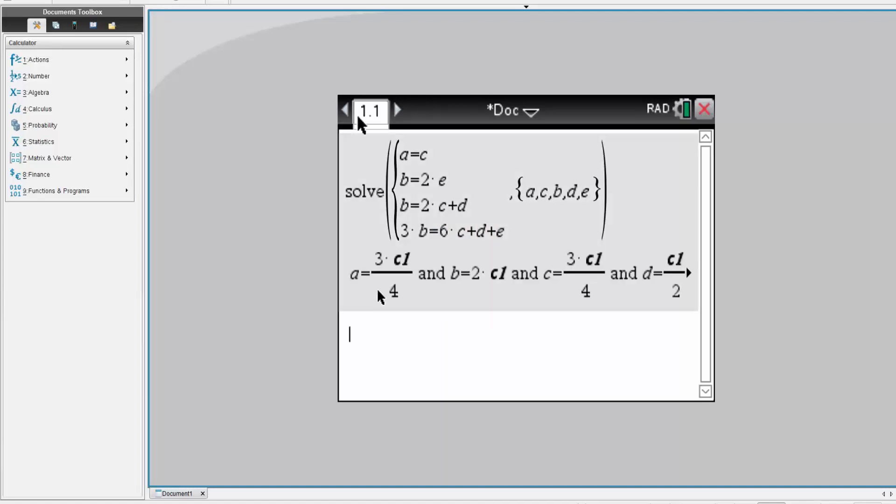Hit enter. And this is the equation. So A is equal to three fourths C1, B is two C1, C is three fourths C1, and D is one half C1, and E is just C1.